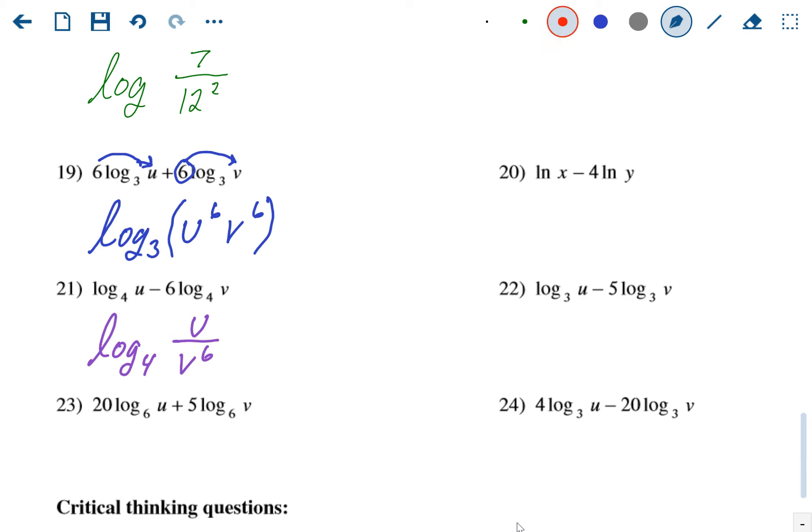And the last one: again, numbers out front go up top as exponents. This is an addition, so it's going to be a multiplication. This is log base 6 of u to the 20th times v to the 5th.